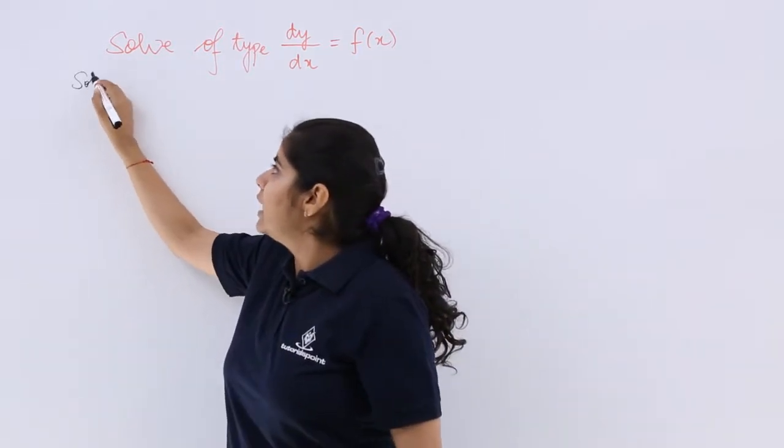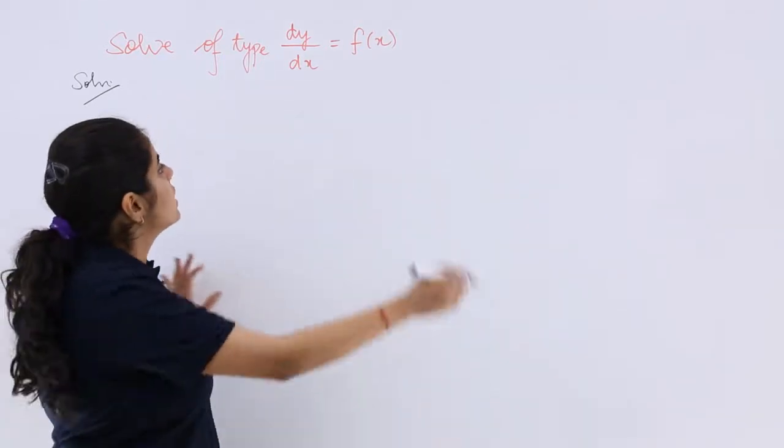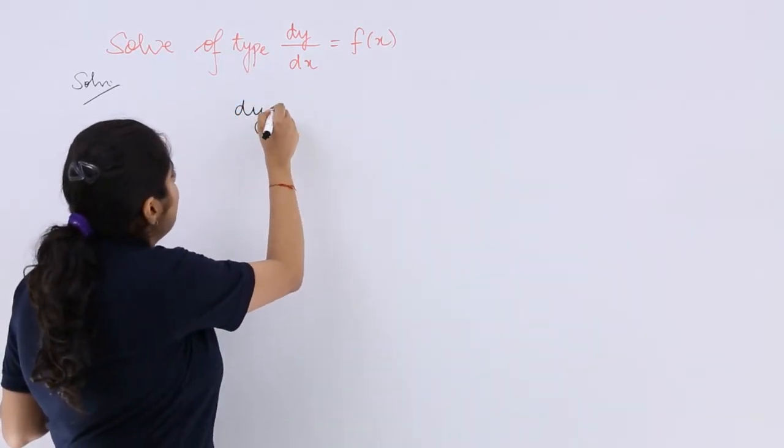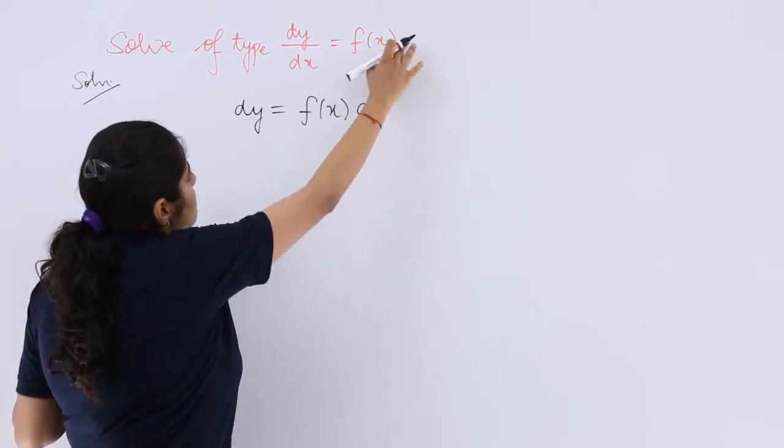So what I will write is solution but what you need to understand for this question is that we have been given dy is equal to f(x) dx if dx is cross multiplied.